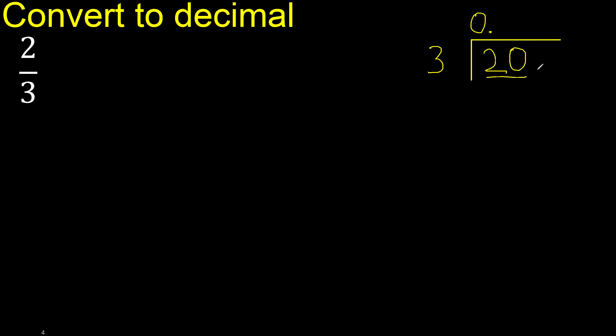OK, 20. 3 — multiply by which number is nearest to 20 but not greater? 3 multiplied by 7 is 21, which is greater. Multiply by 6 is 18.